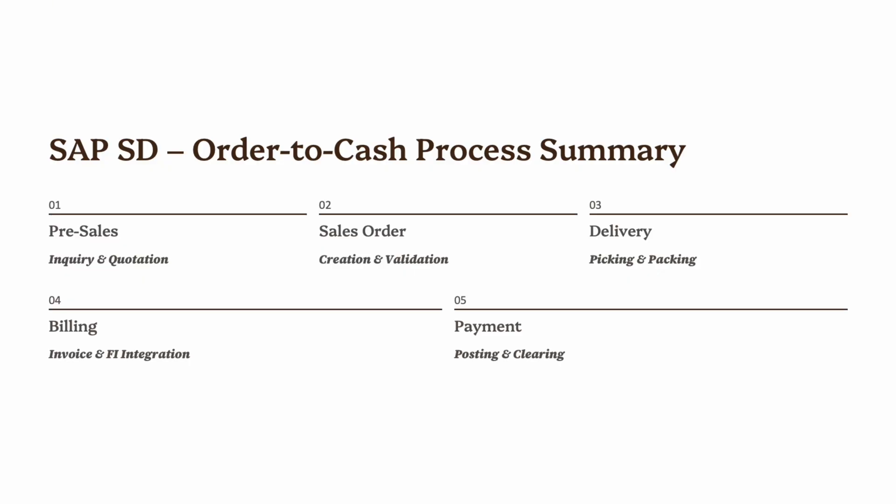Let's quickly recap everything we covered in the order-to-cash process in SAP SD. The full cycle includes five key steps: One, pre-sales activities — inquiry and quotation (VA11, VA21). Two, sales order creation in VA01. Three, delivery processing — shipping goods and posting goods issue in VL01N. Four, billing — creating invoices in VF01 and posting to FI. Five, payment — posting customer payment in F-28 and closing the cycle. Key takeaway: the order-to-cash process connects every part of the business, from sales to logistics to finance, ensuring that every sale turns into actual revenue on the company's books.